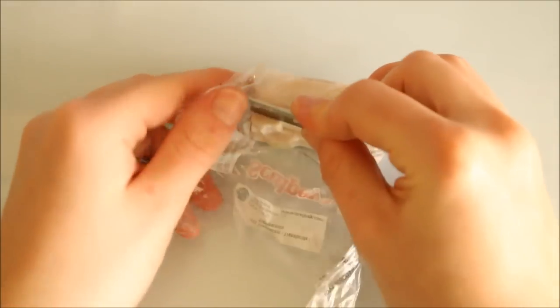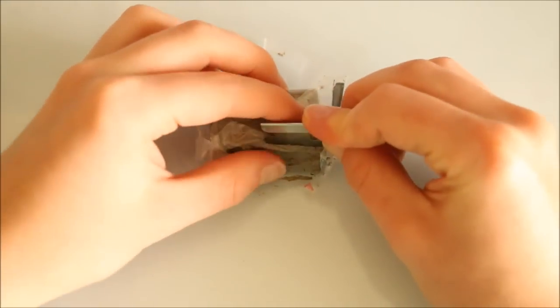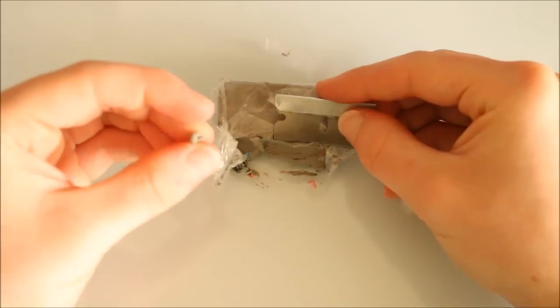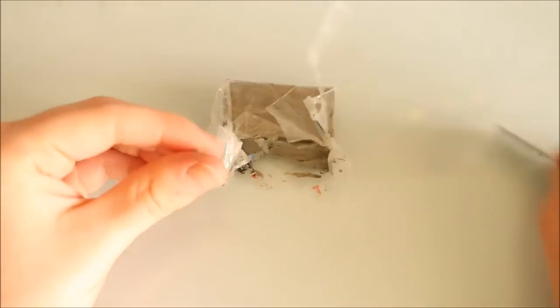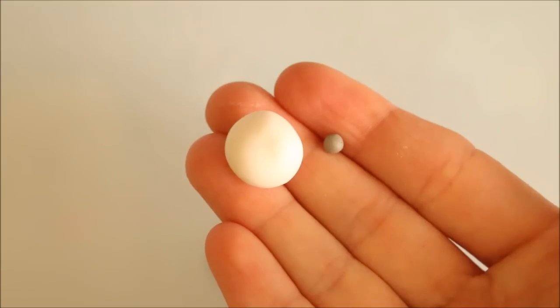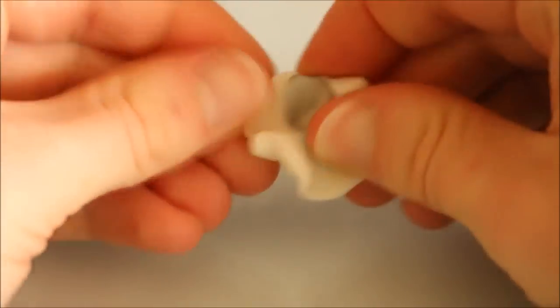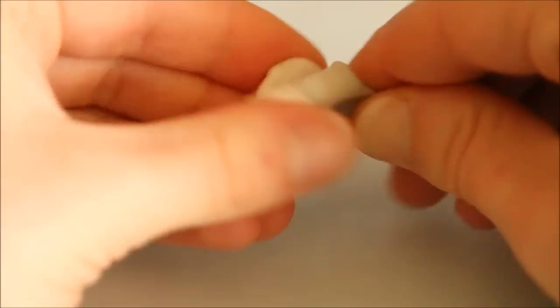So for the granite clay you'll be needing some translucent. Any brand will work but the one I'm using today is by Sculpey. You'll also need a small amount of grey. If you don't have an actual packet of grey you can actually mix your own just using black and white clay. With the ratio of the mixture you want to have a lot more translucent clay than you do of the grey colour. So go ahead and mix both these together.